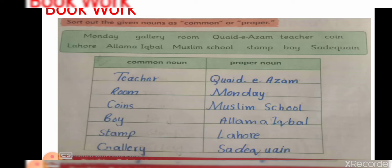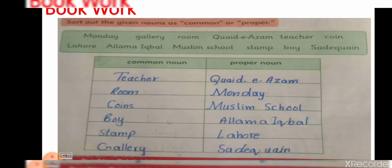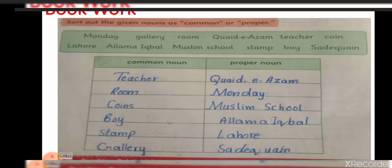Now proper nouns: Kaidazam, Monday, Muslim School — if it is just school, then it is common noun, but the name Muslim School makes it a proper noun. Lahore — just place is common noun, but the place name Lahore is a proper noun. The last word is Sadiqin. This word Sadiqin is a proper noun.